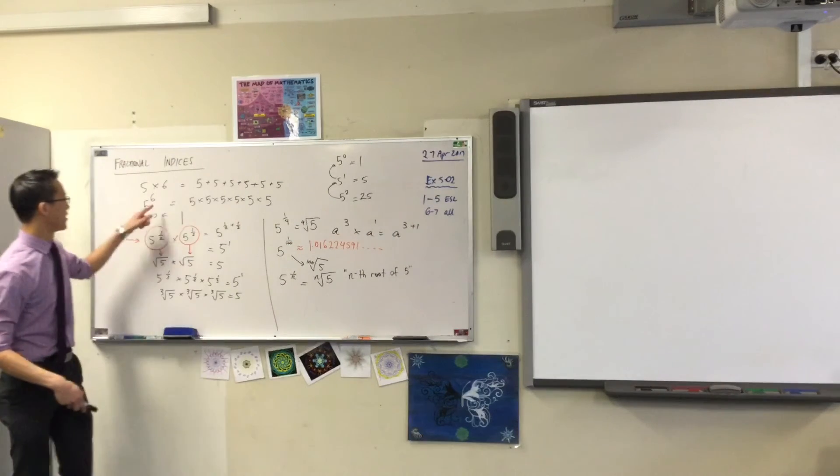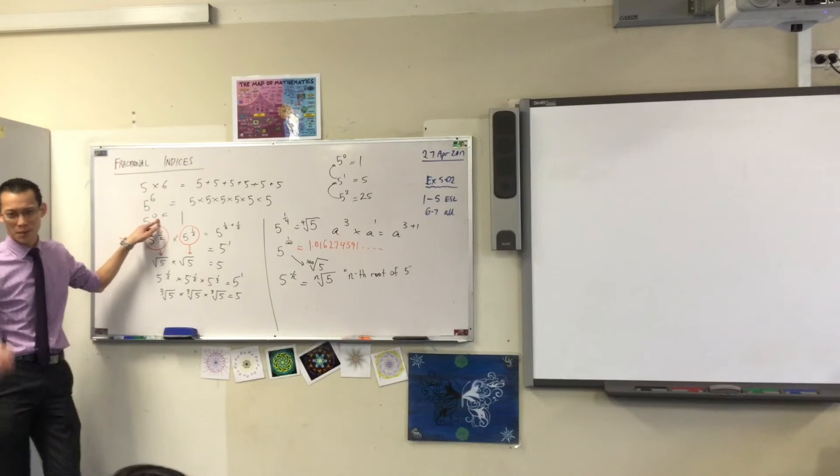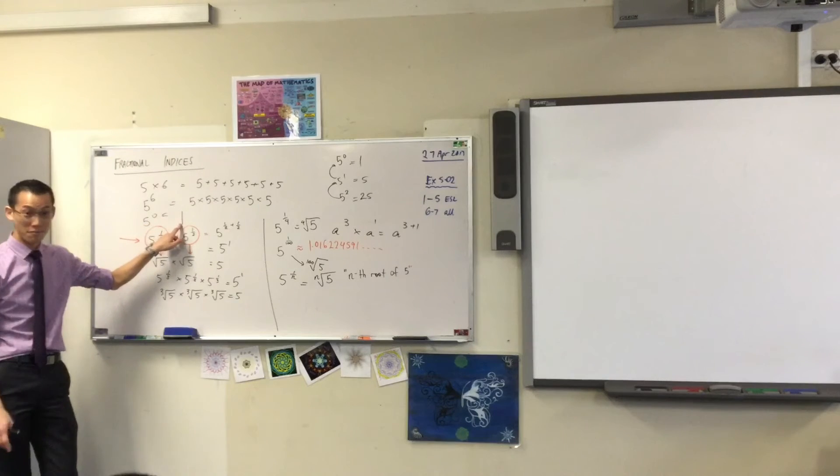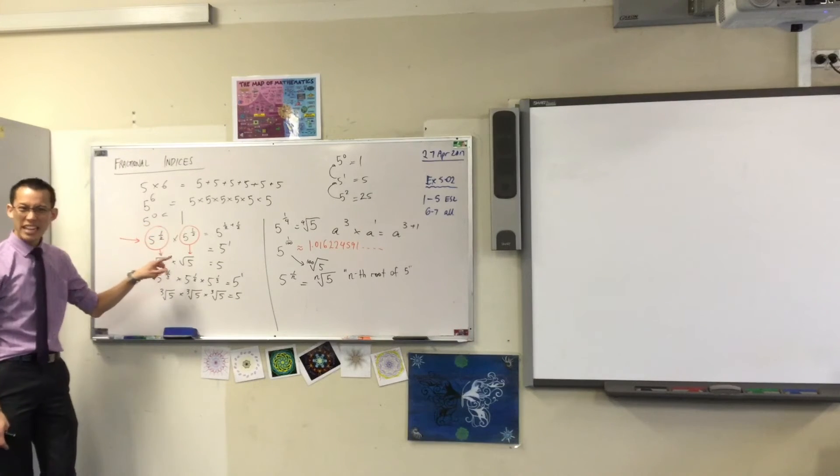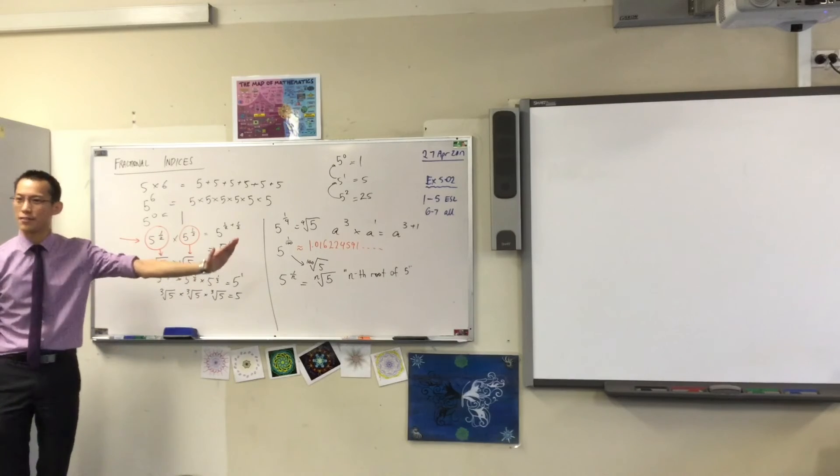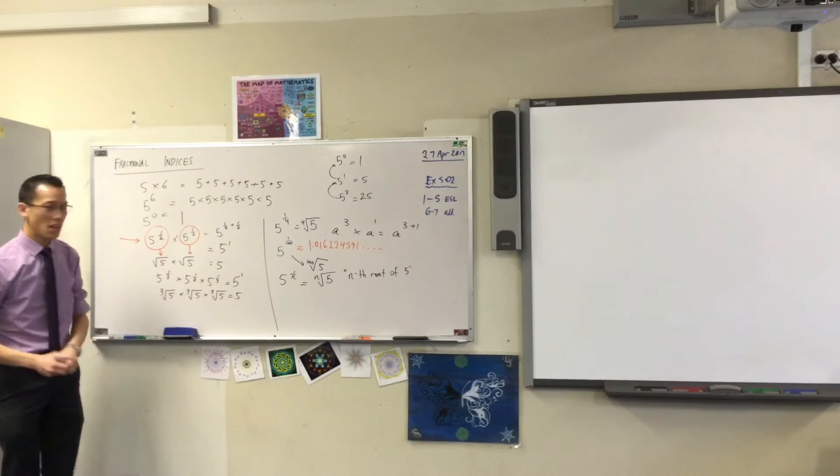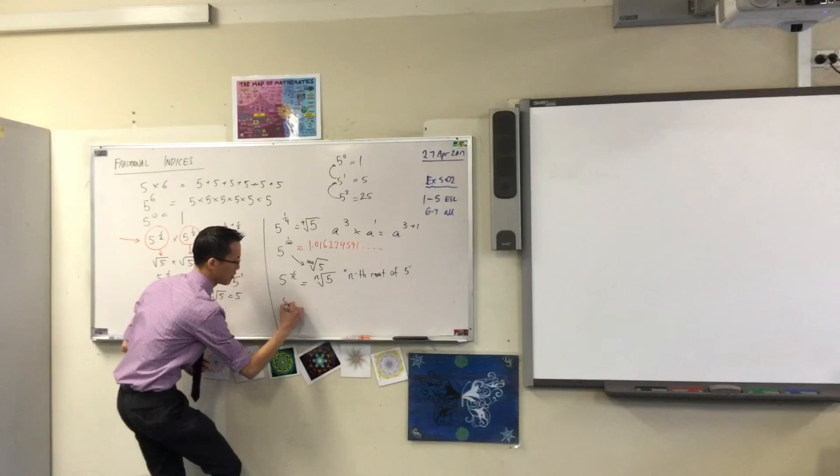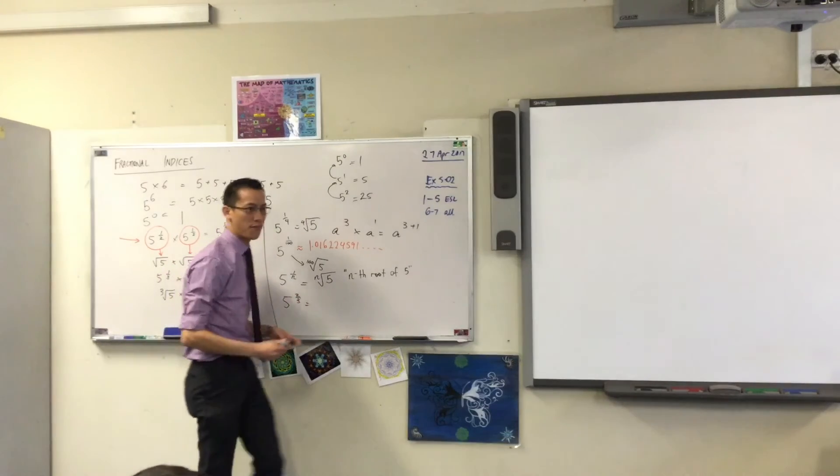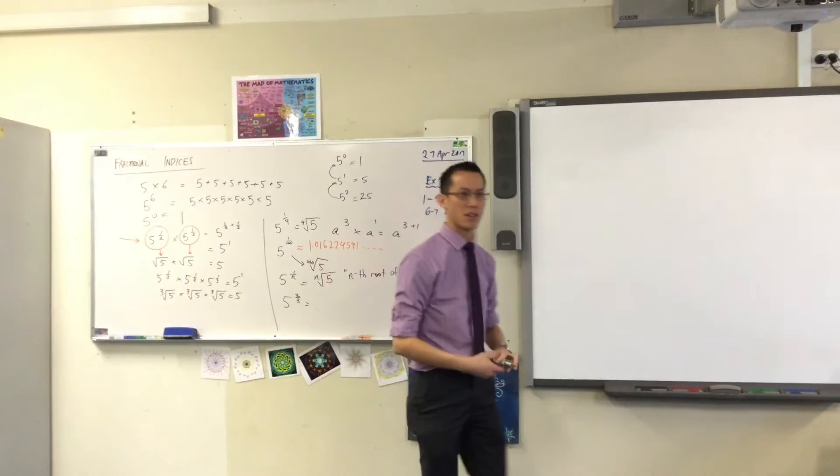So, remember we said, weird, 5 to the power of 0, you don't multiply it by itself any times, you have 1. 5 to the power of a half, it's kind of like halfway to 5. You do it again, you'll get 5. So, what do you think this would be? 5 to the power of 2 thirds?